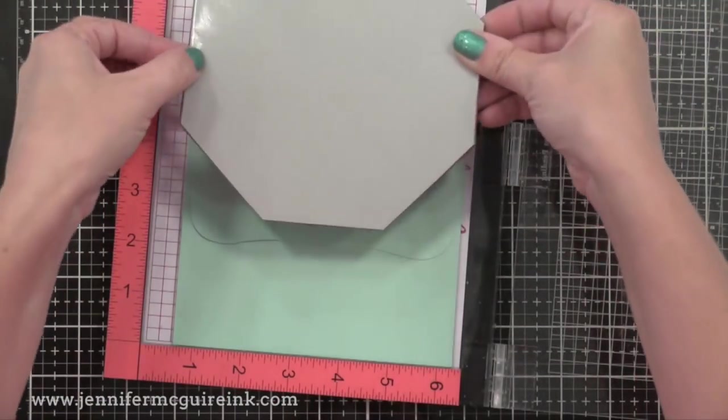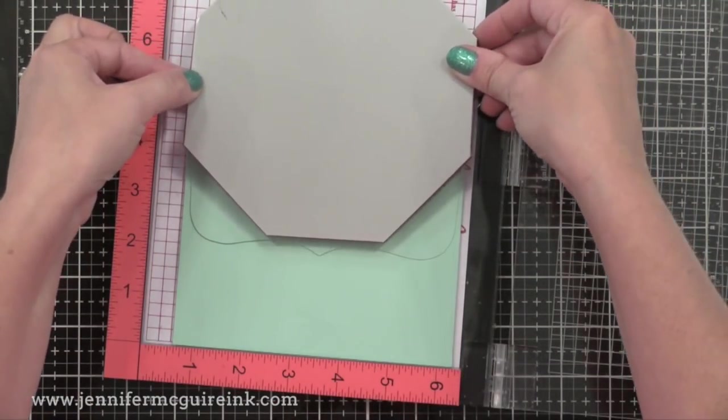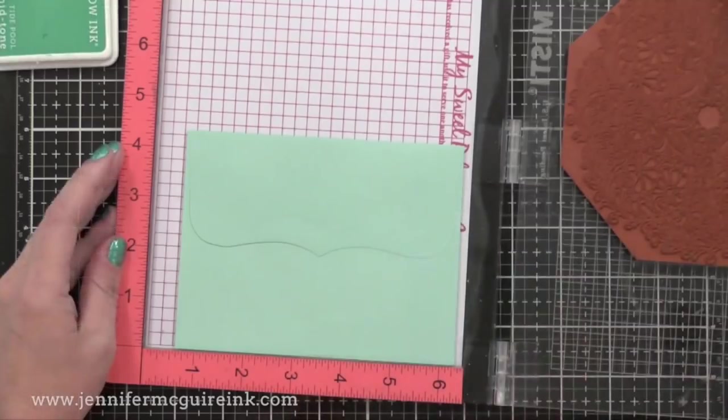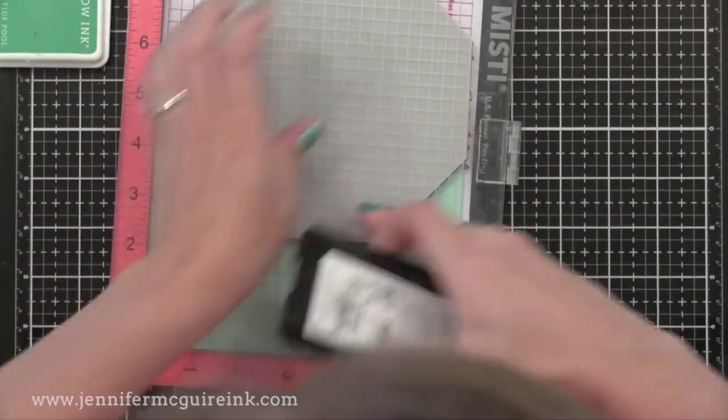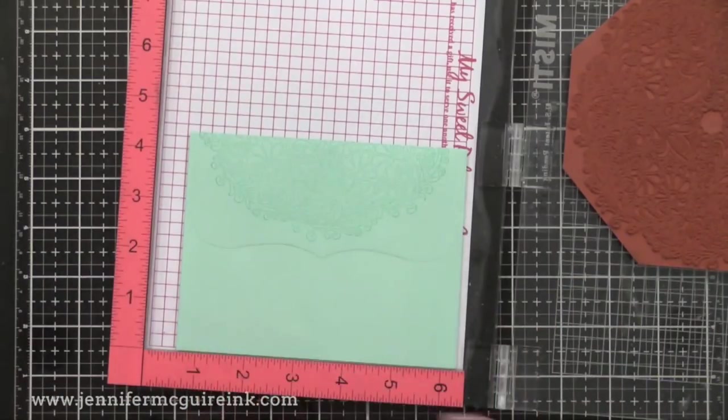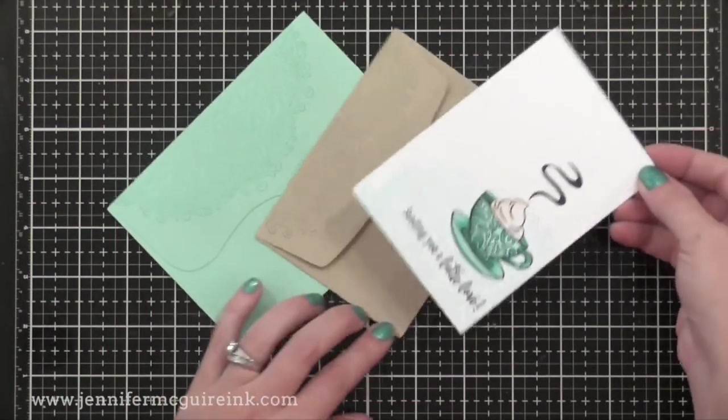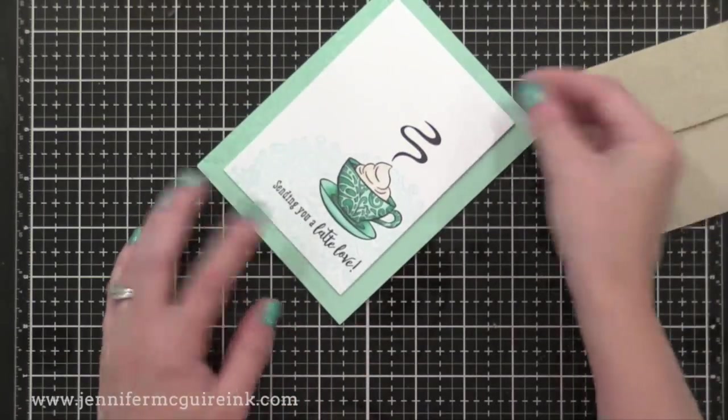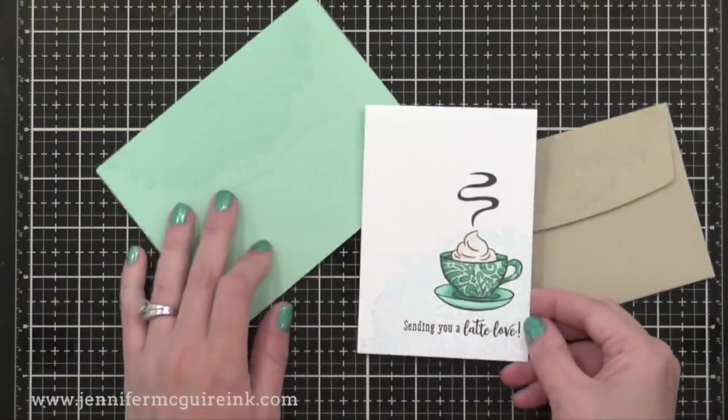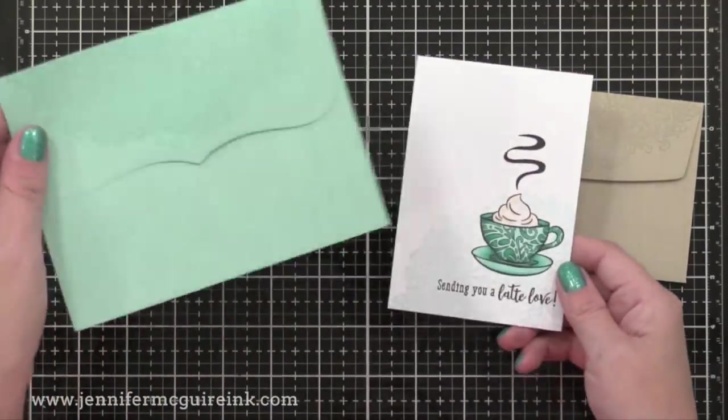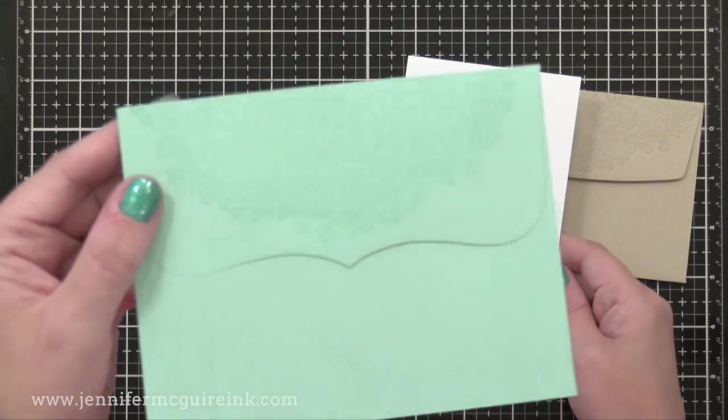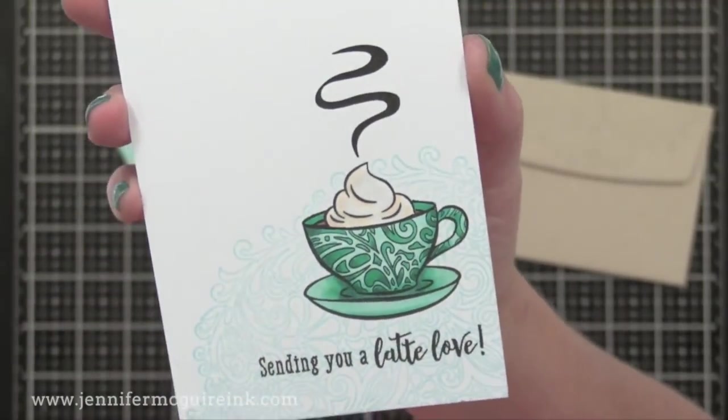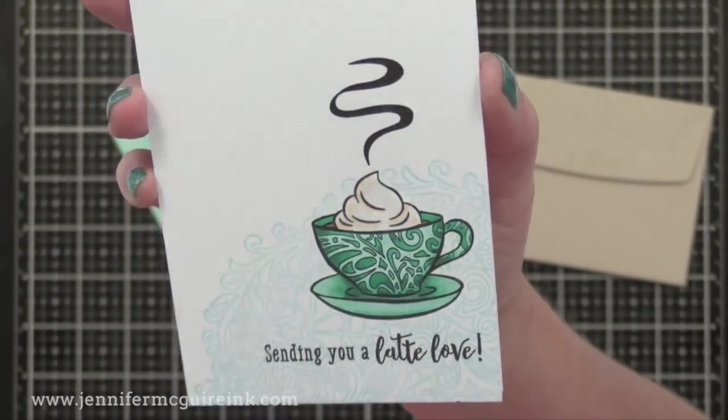Now you have a few options for a coordinating envelope. This is a Hero Arts pool envelope, and I'm placing that same floral doily stamp right along the flap of the envelope, and I'm stamping that with Tide Pool ink. That way the envelope matches the card perfectly. However, that envelope is bigger than our card. Remember, my card is a little bit smaller. You can use a smaller envelope like that craft one where I stamped the same image. But if you don't have smaller envelopes, that's okay. Just use the bigger envelope and put the smaller card inside.